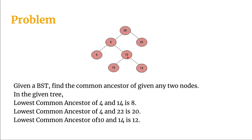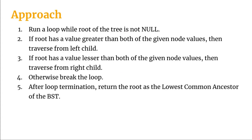Let's look at the approach we will take to solve this problem. We will run a loop while the root of the tree is not null. If the root has a value greater than both of the given node values, then traverse to the left child. If the root has a value lesser than both of the given node values, then traverse to the right child. Otherwise, we break the loop and return the root as the lowest common ancestor.